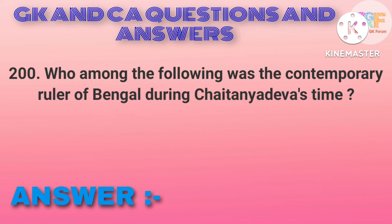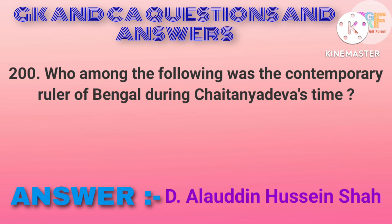Who among the following was the contemporary ruler of Bengal during Chaitanya Deva's time? Option D: Alauddin Hussain Shah.